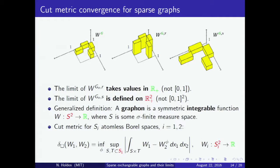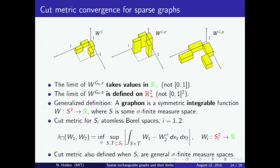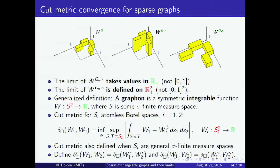We introduce a generalized definition of a graphon: a symmetric integrable function defined on the product of some measure space with itself, taking any real value. The two graphons WR and WS are always renormalized so that the integral of the graphon equals 1, so we require graphons to be integrable. We then generalize the definition of the cut metric to treat these generalized graphons. In the case of atomless Borel spaces the definition is identical as before, but we also define the cut metric for general sigma-finite measure spaces. The rescaled and stretched cut metrics are defined by rescaling or stretching the graphons before evaluating the distance.